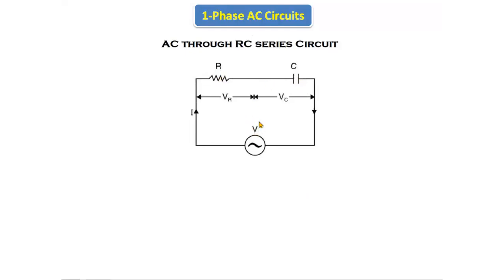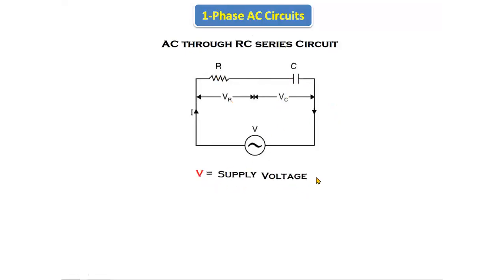Here, V is the total voltage we are applying. Vr is the voltage across the resistor and Vc is the voltage across the capacitor, and I is the total current. V is called the supply voltage. We are giving AC supply to the RC series circuit.